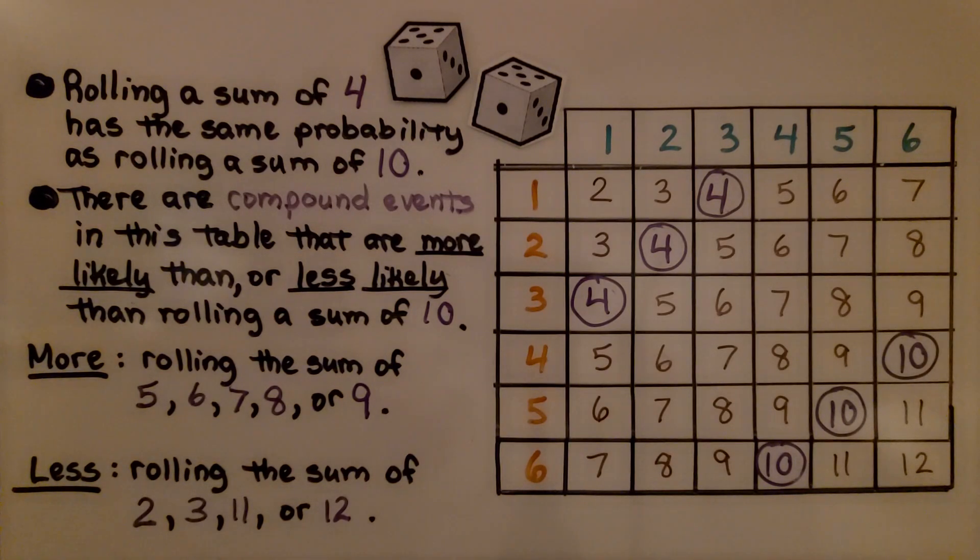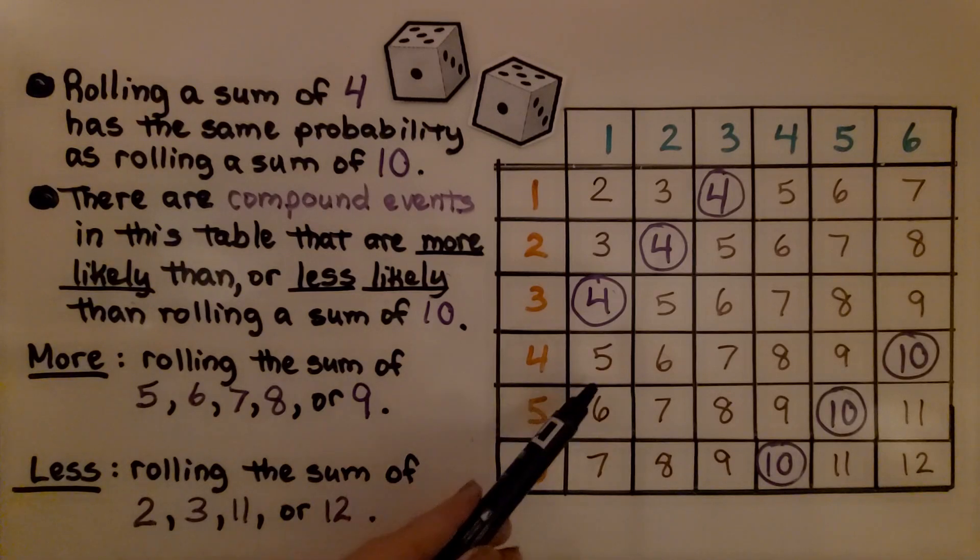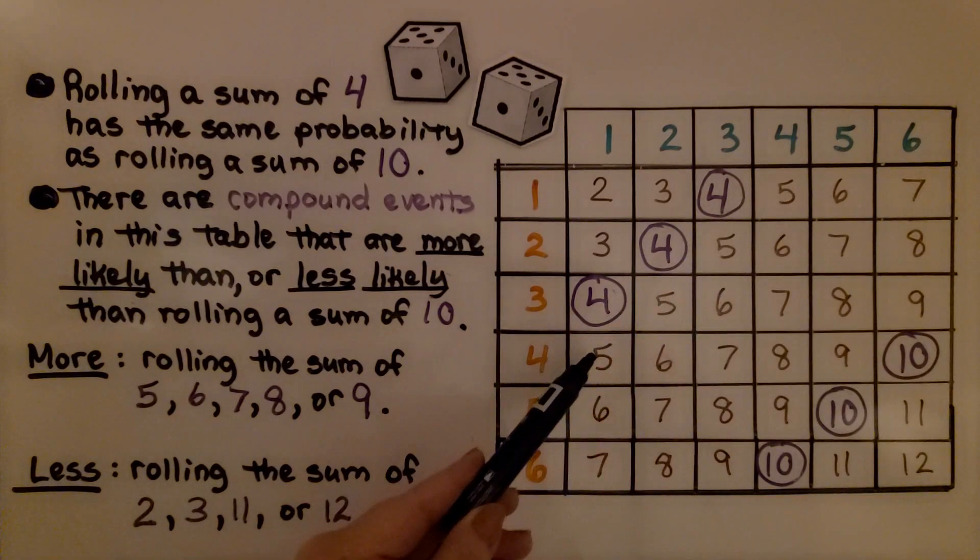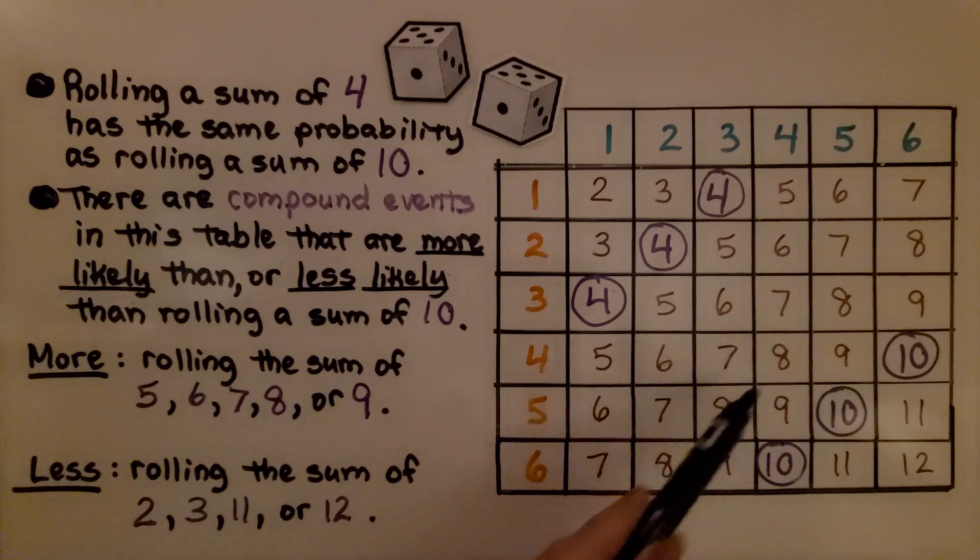There are compound events in this table that are more likely than or less likely than rolling a sum of 10. More likely would be rolling the sum of 5, 6, 7, 8, or 9. Look how many 5s there are, or 6s, or 7s, or 8s, or 9s. Their probability is more likely.